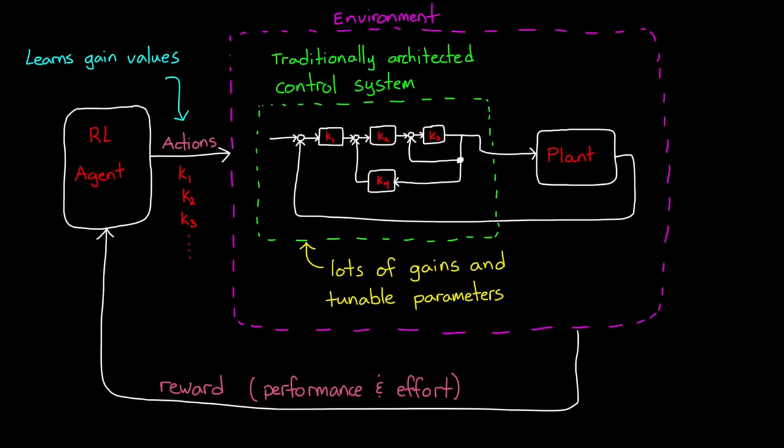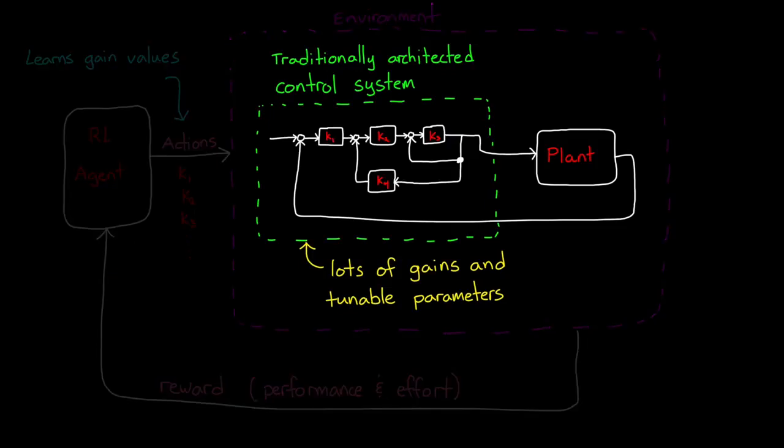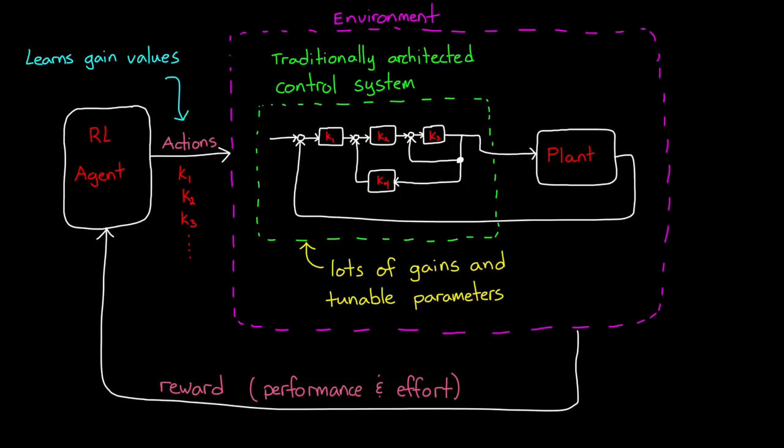So in this way, you still have a traditionally architected system. One that can be verified and manually adjusted on the hardware just like we're used to. But you populated it with gain values that were optimally selected using reinforcement learning. Sort of a best of both worlds approach. So hopefully you can see that reinforcement learning is really powerful for solving hard problems. And that it's definitely worth learning and figuring out how to combine it with traditional approaches in a way that you feel comfortable with the final product.